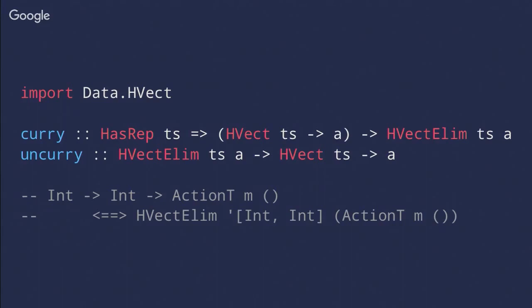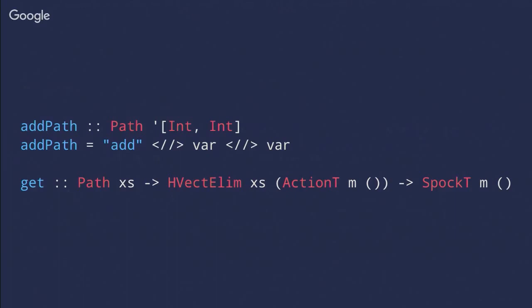For those interested in the technical details: the core is type-level lists. A function that takes an Int and another Int and runs in an action is equivalent to HVec eliminating type-level lists of Ints with the return type. With some type-level hackery you can turn any such function into one that takes a type-level list, and you can curry and uncurry functions with infinite-sized tuples. There's a HasRep type class for implementation details.